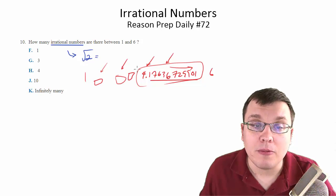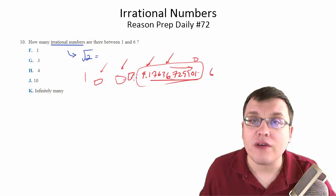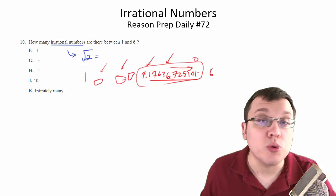I could put one here. I could put one here, here, here. There's an infinite number of irrational numbers between 1 and 6.